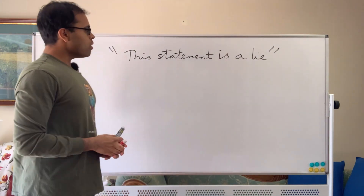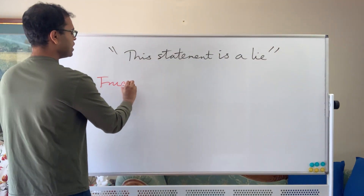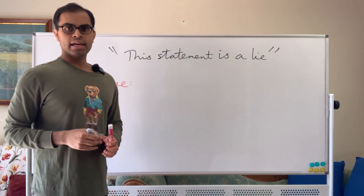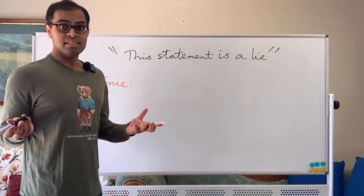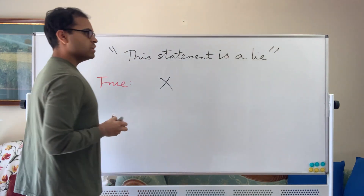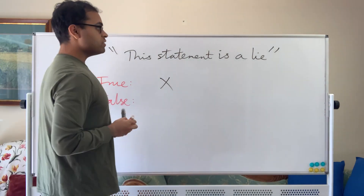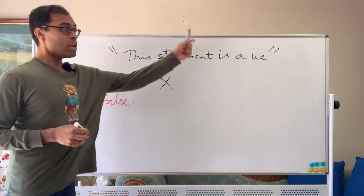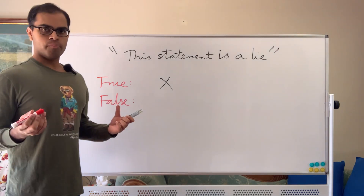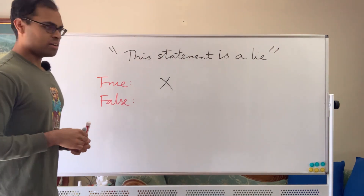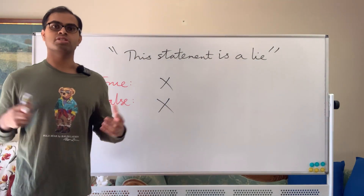The paradox is: is the statement true or is it false? If it's true, that means the statement is a lie, which means it's false — that's an inconsistency. If it's false, then it's not a lie, but the statement says it is a lie, so it must be true — that's also an inconsistency. Either way there's an inconsistency. This is what we call a paradox: any possibility leads to a logical inconsistency.